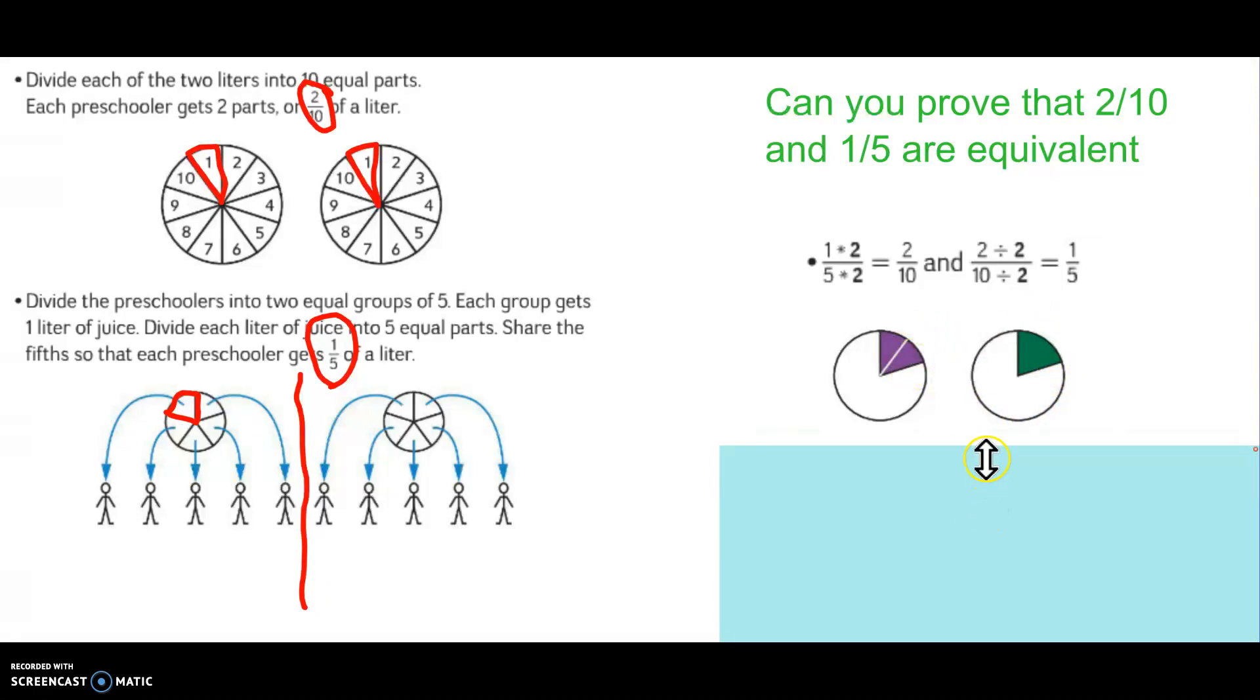Another way to prove it? On a number line. This is zero, and here's one. My one whole is the distance between zero and one. So I see that the number line is divided into one, two, three, four, five, six, seven, eight, nine, ten tick marks.